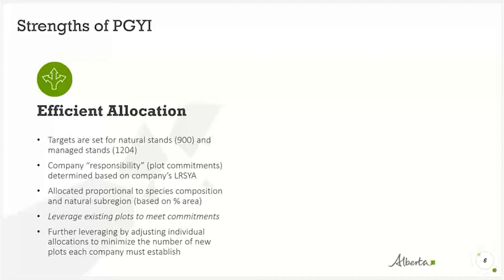Once each company was assigned their responsibility, an allocation was assigned based on species composition representation on each company's FMA area and representation of natural subregions. A company responsible for 75 plots with a lot of hardwood in the central mixedwoods would be responsible for establishing more hardwood plots in that subregion. Leveraging comes in because companies can use their existing plots to meet those commitments — we have plots in Alberta established in the 1960s with up to 10 measurements in the database.